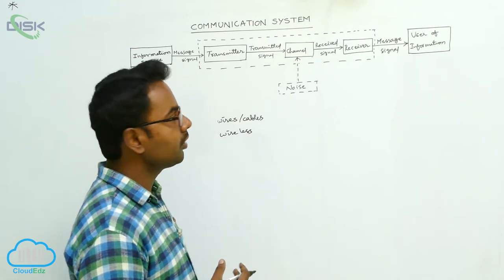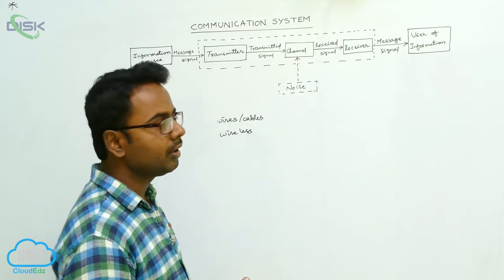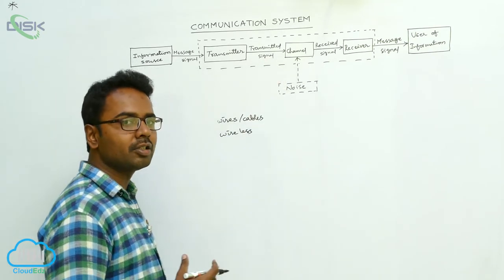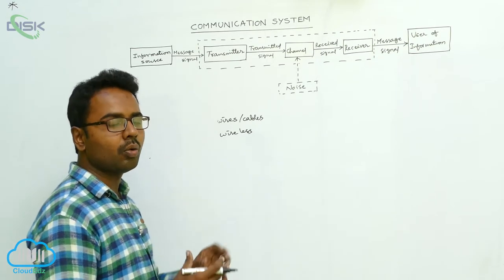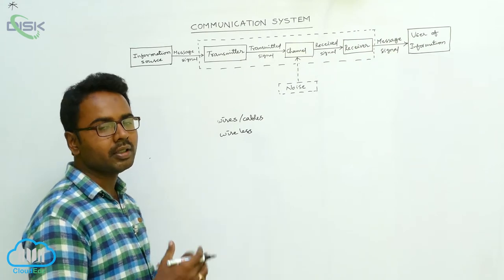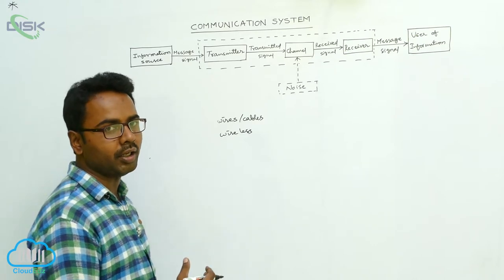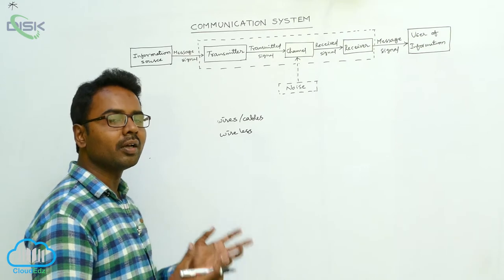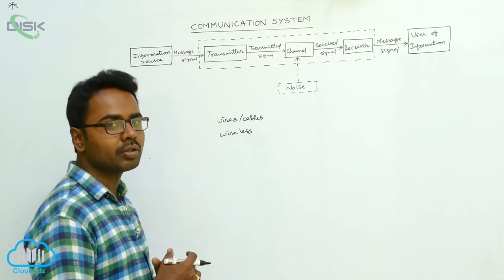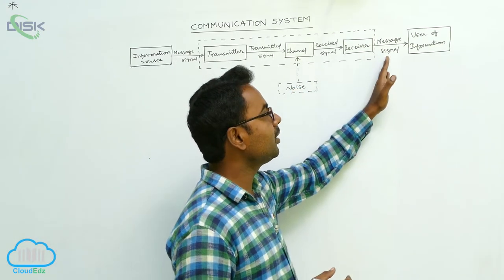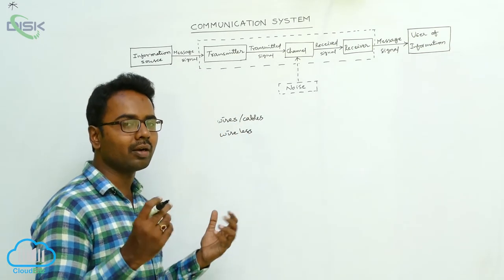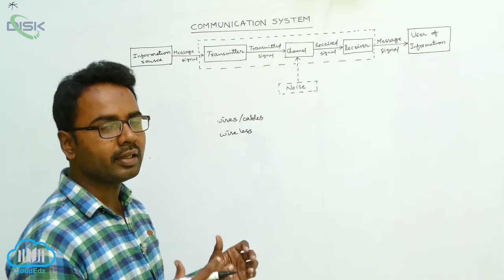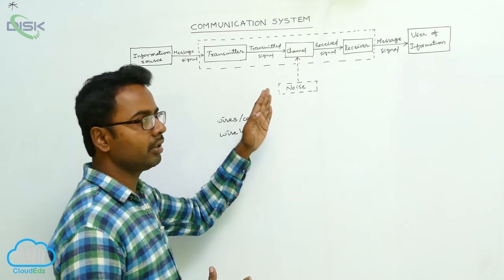At the output of the channel, the receiver receives the signals. When signals propagate through the channel, they may be distorted — some noise is added to the signals. Noise is nothing but unwanted signals added to the information signals that disturb the transmission. The receiver receives these distorted signals, reconstructs the original signal, and sends it to the user of information. For example, when we listen to music on a radio, we are the user of information.